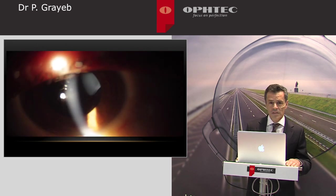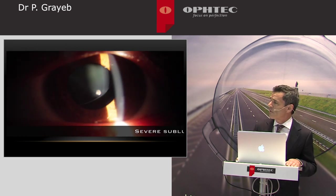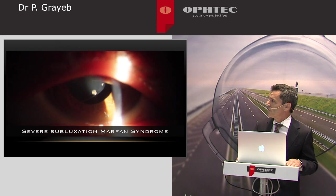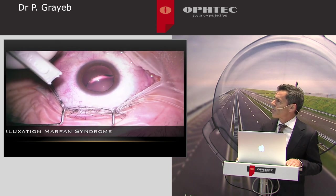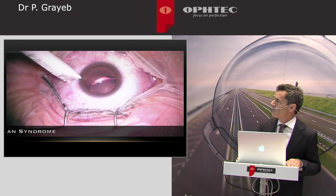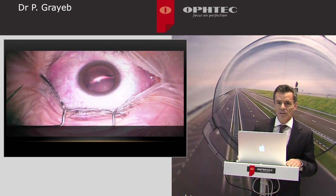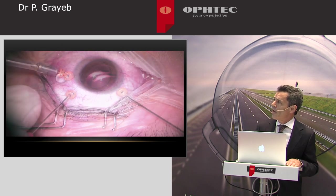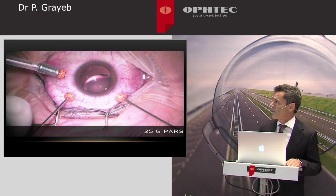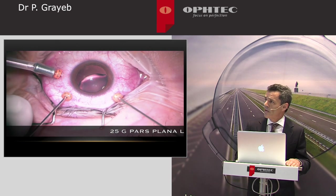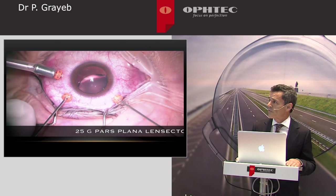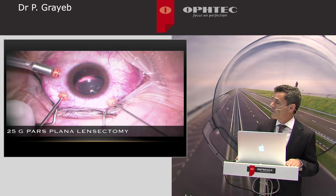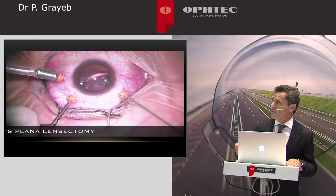The case I will be presenting pertains to a young adult with severe subluxation of his crystalline lens with great weakness of the zonules. Given these challenging conditions, I found it less traumatic to perform a phaco vitrectomy via pars plana. If you choose a scleral fixation technique, you will need to use capsular support hooks, CTRs, and trans-scleral sutures.